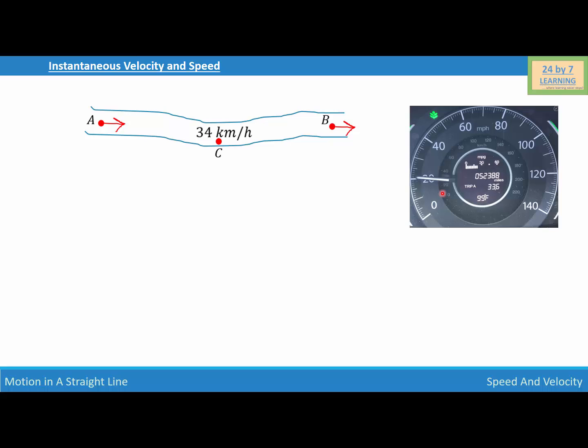Now let's consider the definition of instantaneous speed and velocity. Instantaneous speed is defined as the speed at any given instant of time. In this example, the instantaneous speed is 34 kilometers per hour.